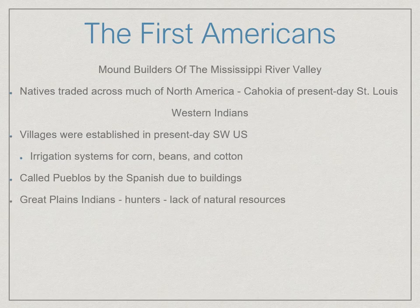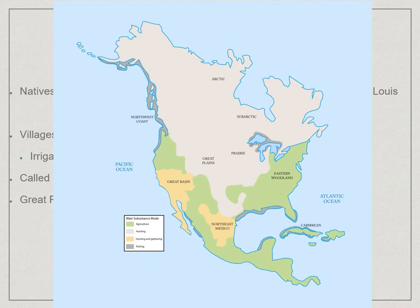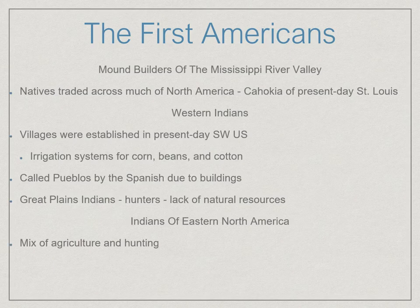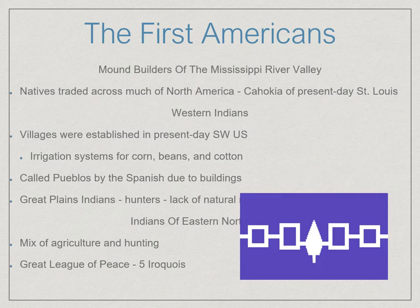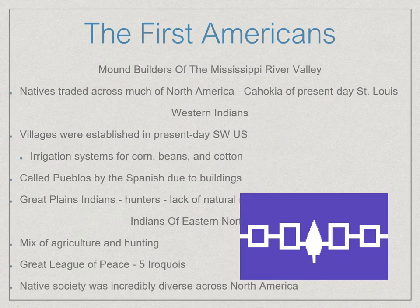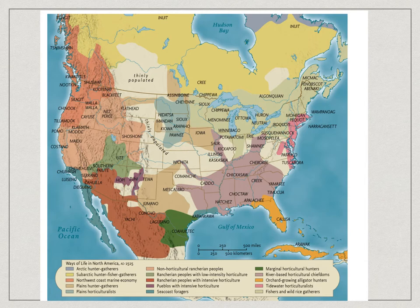On the Great Plains, there were hunter-gatherers across this vast central part of North America. On the eastern coast, there was a mix of agriculture, hunting, and sea foraging groups. The five Iroquois tribes created the Great League of Peace — five different tribes that came together to create a nation comparable to anywhere else in the world at that time. Ultimately, all across North America, native society didn't fit into one mold. You can't say all natives were one thing, because they were so very diverse.